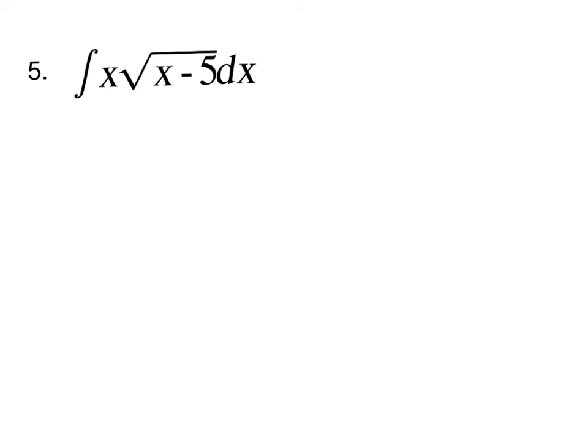Alright, last one. Now this one is a u substitution, but it's a little bit different. So what are your instincts for this? Our instincts are typically to let u be the inside. So if u is the inside, we get x minus 5. That means what's du dx? That's just 1, right? So that means du equals dx. So now if I try to make that substitution, I've got x the square root of u du. But I still have an x in the problem. Is there a way to get rid of that?